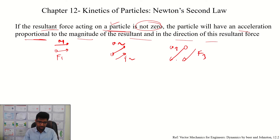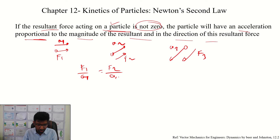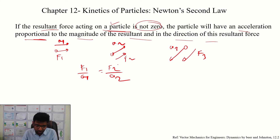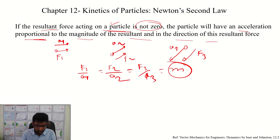If you have a particle, the acceleration will be the same. In this case, we will have a particular force-to-acceleration ratio. Force divided by acceleration — this particular ratio is common because these three particular cases are for the same particle. F1, F2, F3 divided by a3 — this is the mass of the body. Basically, force equals mass into acceleration.